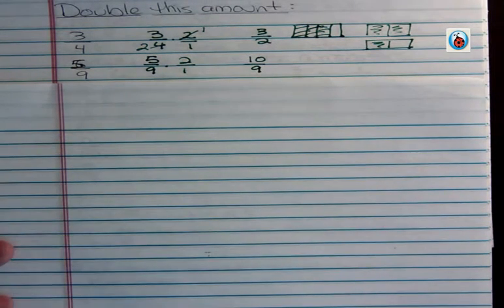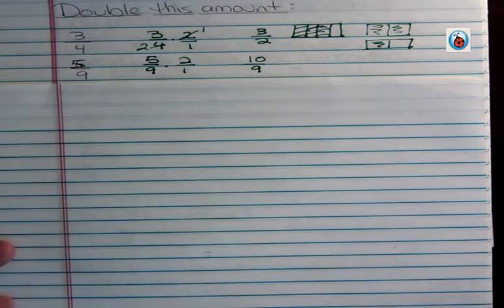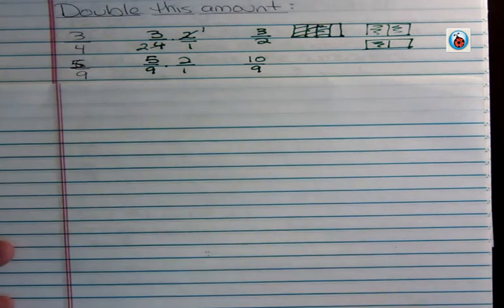Those are the two things that can happen. Either you cut the denominator in half or you double the top. It just depends on whether you have an even or an odd number for a denominator.